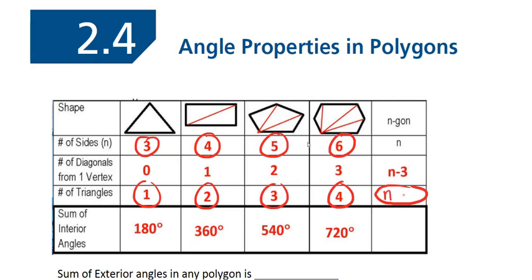Okay, good. N minus 2. Yes. So if you have five sides, you have three triangles that can be formed inside that. Six and four. So N minus 2.